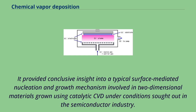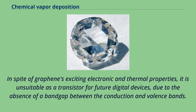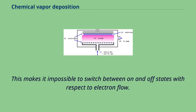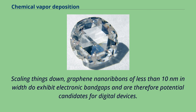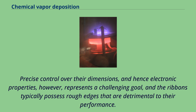In spite of graphene's exciting electronic and thermal properties, it is unsuitable as a transistor for future digital devices due to the absence of a band gap between the conduction and valence bands. This makes it impossible to switch between on and off states with respect to electron flow. Scaling things down, graphene nanoribbons of less than 10 nanometers in width do exhibit electronic band gaps and are therefore potential candidates for digital devices. However, precise control over their dimensions and electronic properties represents a challenging goal, and the ribbons typically possess rough edges that are detrimental to their performance.